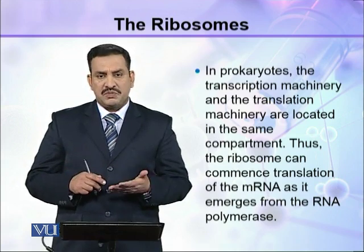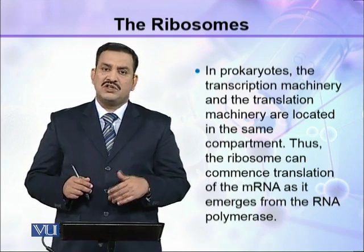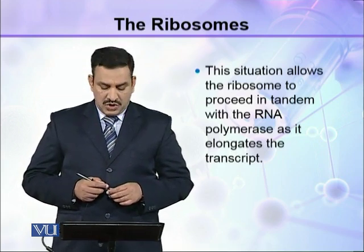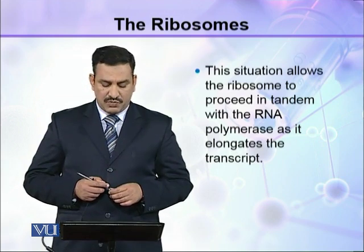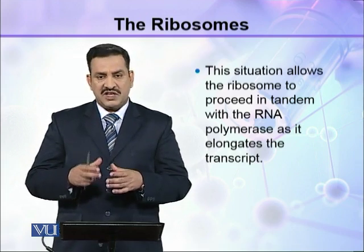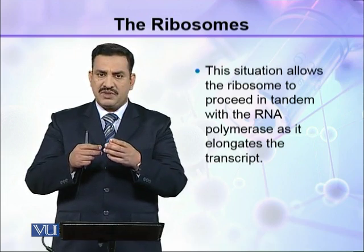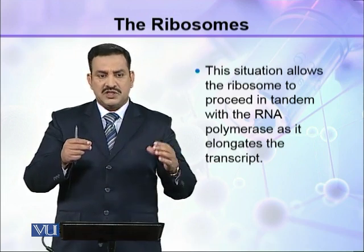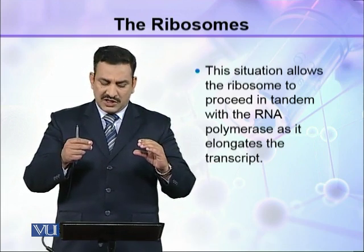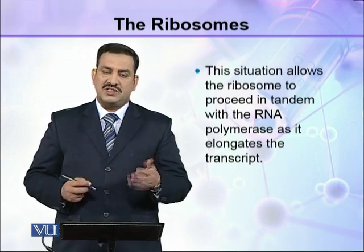RNA transcription is taking place at one place in the cell, and at the same place translation can be started. This situation allows the ribosome to proceed in tandem with the RNA polymerase as it elongates the transcript. This means that as the RNA transcript is being created, translation proceeds alongside it and protein synthesis continues simultaneously.